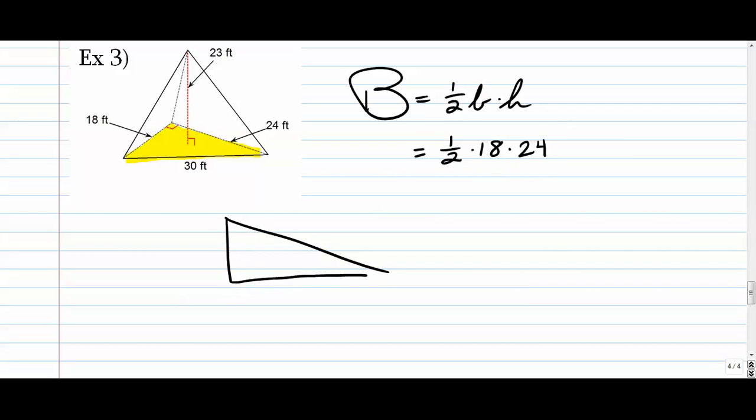Now if I were to sort of draw that base off to the side, it would look like this: eighteen, twenty-four, and thirty. Notice thirty is the hypotenuse. It's across from the right angle. When you're finding the area of a triangle, it doesn't matter what the hypotenuse is. This is your base, and this is your height. They're always going to be perpendicular to each other in right triangles. The base and height are always perpendicular to each other. They are intersecting at ninety degrees. So we don't even use thirty in this case. One-half of eighteen is nine, times twenty-four, that's one-eighty, plus thirty-six, that's two-sixteen.